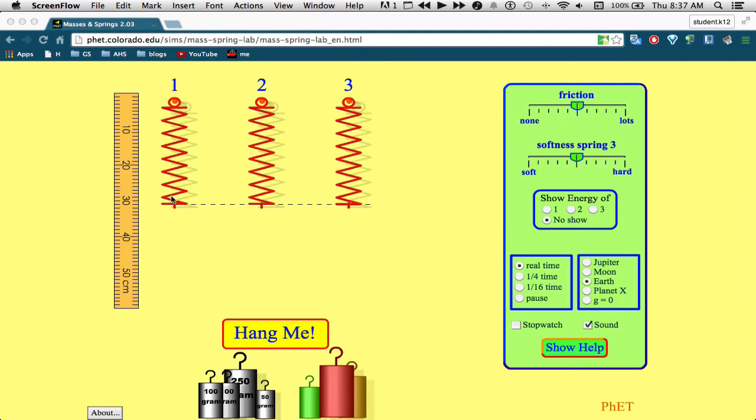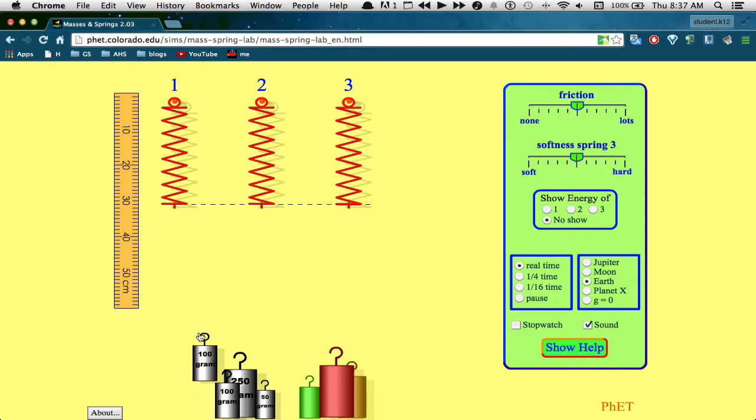You're going to be hanging masses on these different springs. Every spring is identical. To hang a mass, just grab it and drag it to the bottom of the spring, and it'll grab it. It moves around too much.